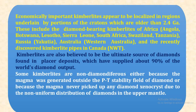Economically important kimberlites appear to be localized in regions underlain by portions of cratons older than 2.4 Ga. This includes the diamond-bearing kimberlites of Africa — including Angola, Botswana, Lesotho, Sierra Leone, Liberia, South Africa, Swaziland, Tanzania — as well as Russia and Yakutia, Australia and Western Australia, and recently discovered kimberlite pipes in Canada.